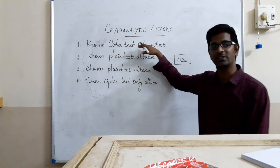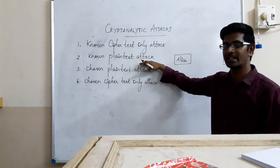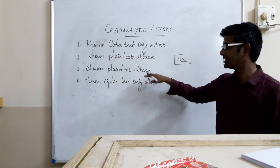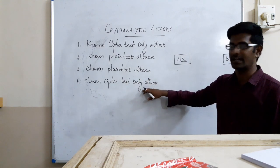The four categories are: Ciphertext Only Attack, Known Plaintext Attack, Chosen Plaintext Attack, and Chosen Ciphertext Attack.